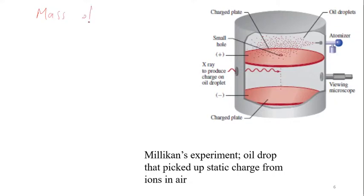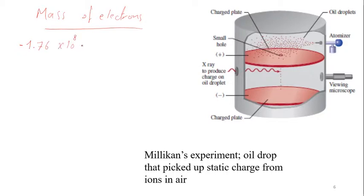The first attempt to calculate the mass of electrons was done by Thomson. He concluded that the charge relative to the mass is equal to −1.67 × 10⁸ charge per mass.